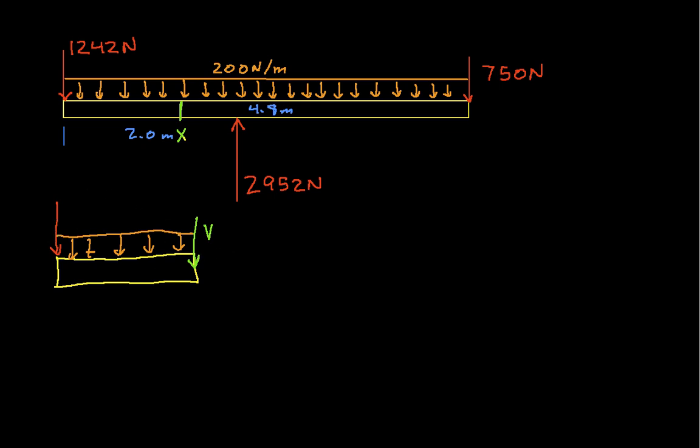Well, we can basically, again, sum the forces in the y direction and set them equal to 0. The only thing that's different now from our previous example is we have this distributed force. So, the total force is down, but the total force that we have will depend on the length of x. So, let's start,